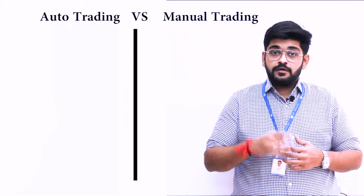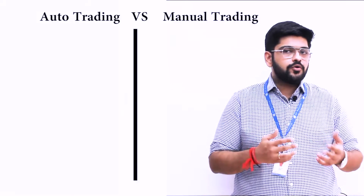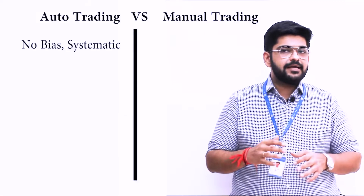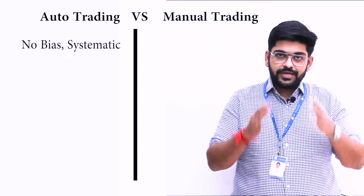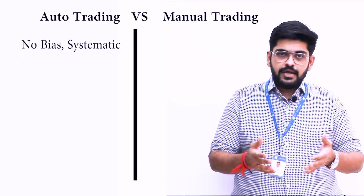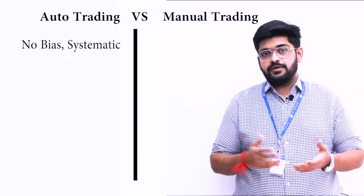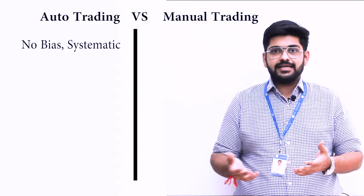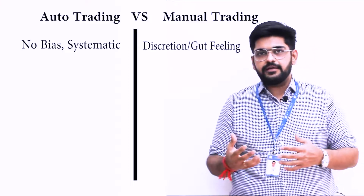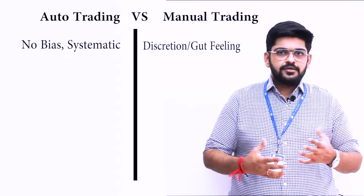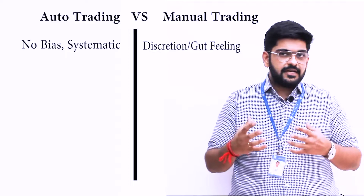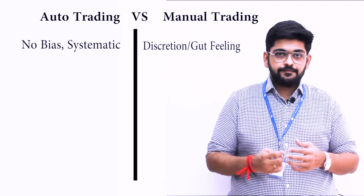Let us first examine the benefits of an automated trading system versus manual trading. Primarily, emotion — auto trading has no bias. It does what you tell it to do and it is very systematic, whereas manual trading has a lot of discretion, gut feeling, and market reading. There are many other elements that come into manual trading.